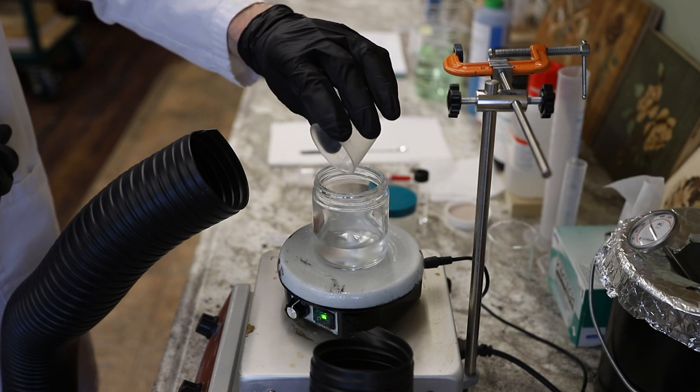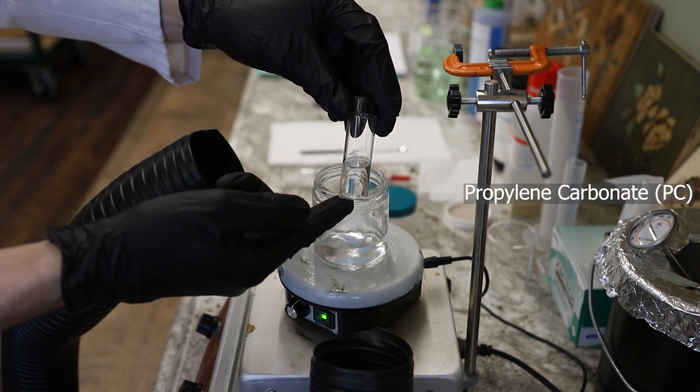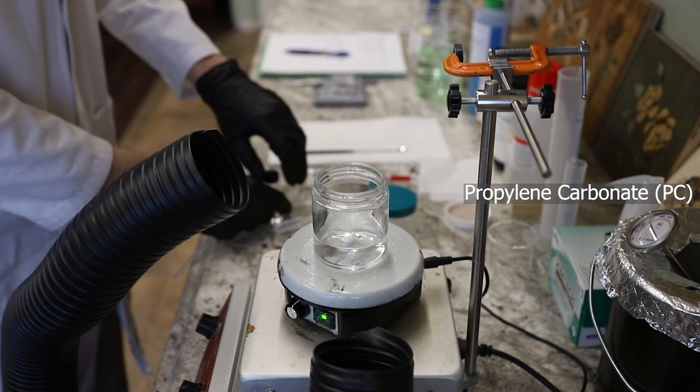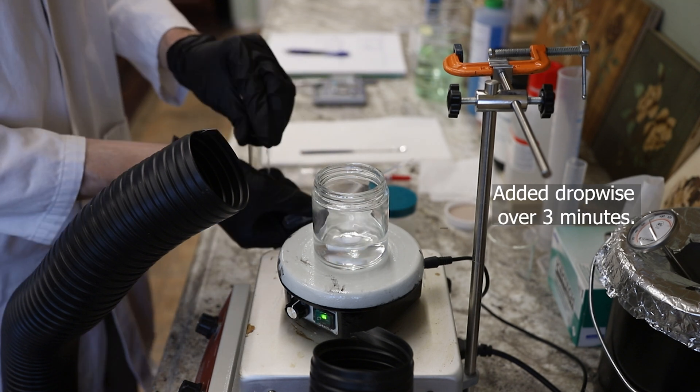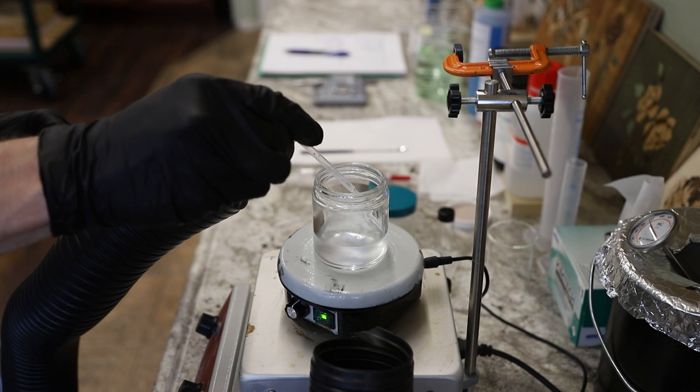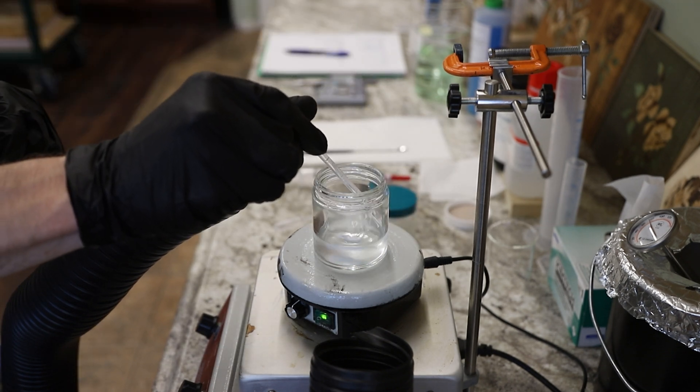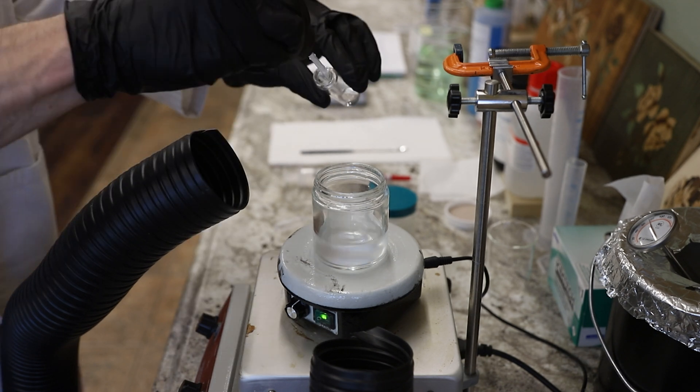So here I've added the EcoSurf EH6, which is my surfactant, and then I'm adding my propylene carbonate, which is the solvent. It's a hydrogen bond-accepting solvent, and I'm going to add it drop-wise over a period of several minutes. It's about one drop per second, and I watch the solution as I do it to see if it starts to get cloudy.